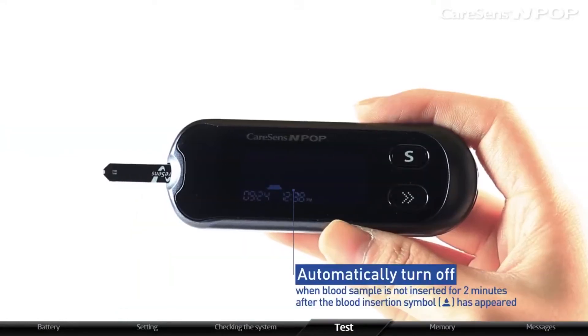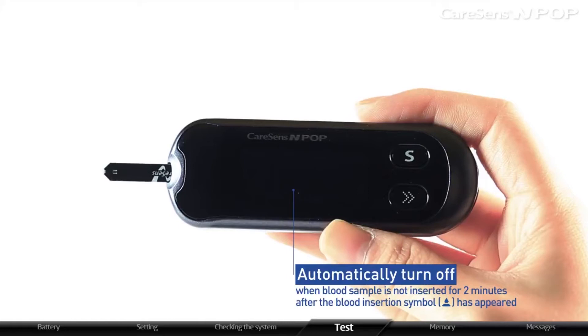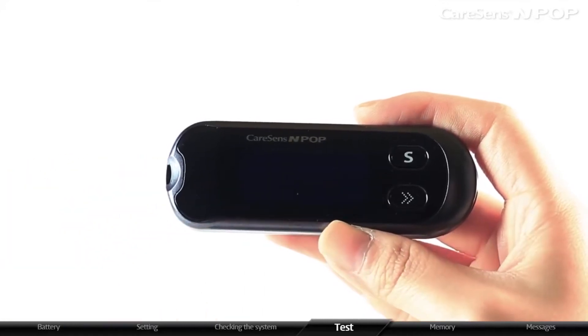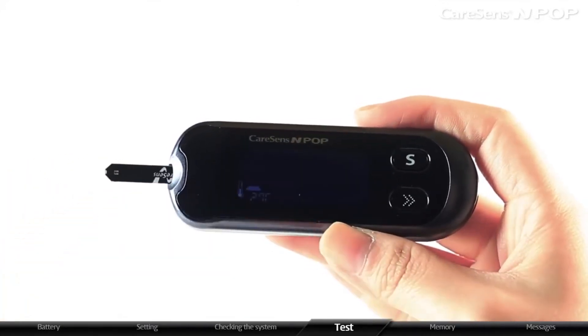The meter will automatically turn off when blood sample is not inserted for 2 minutes after the blood insertion symbol has appeared. When the meter is turned off, remove the test strip and reinsert it to test.